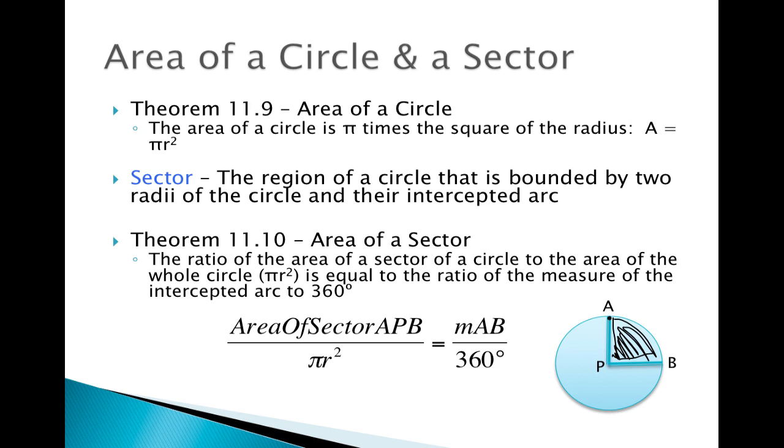Because remember, our sector is the area that's bounded by two radii. So these would be two different radii, right here, of the circle. They have the same length because they're both radius of the same circle, and then they're bounded also by the arc AB.